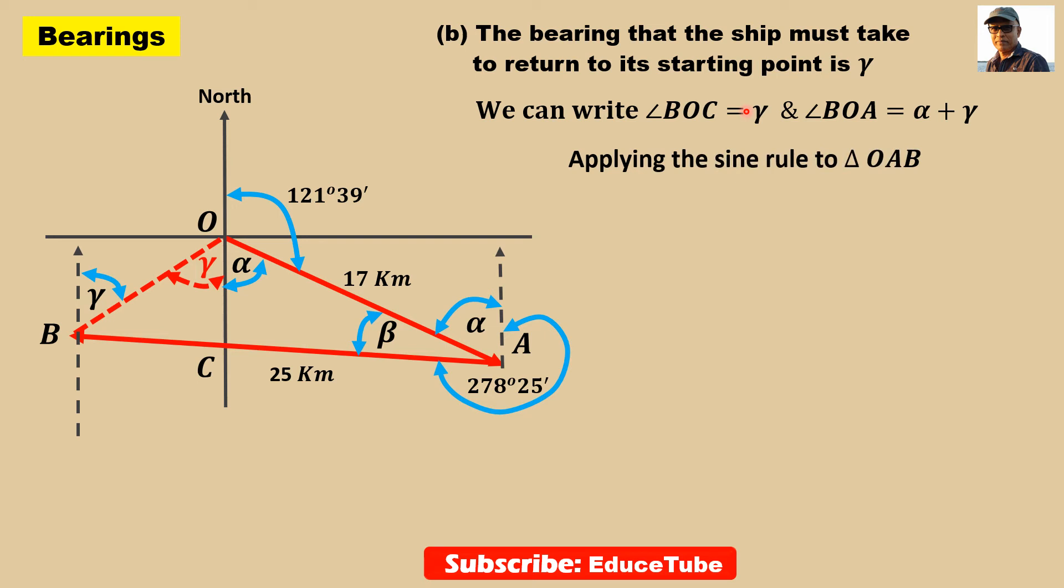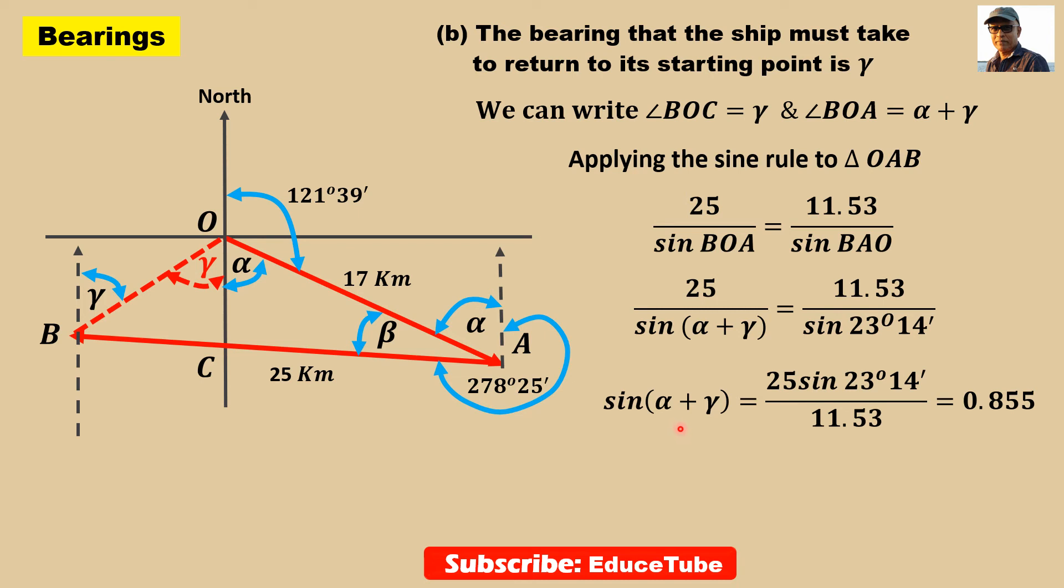Now applying sine rule to triangle OAB. We can write 25 divided by sine of angle BOA, and 11.53 divided by sine of angle BAO. BOA is beta. So we put this value 23 degrees 14 minutes. Cross multiplying, sine(alpha + gamma) equals 0.855. Using calculator, alpha plus gamma equals 58 degrees 45 minutes. But here one important point.